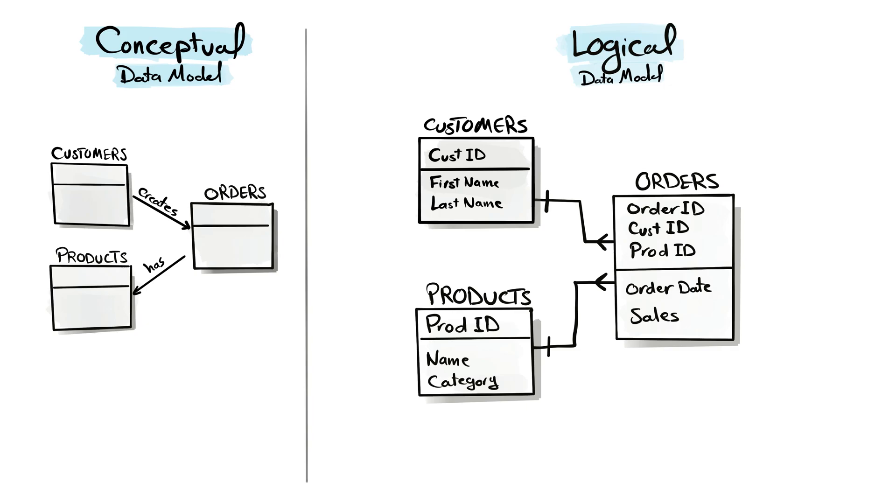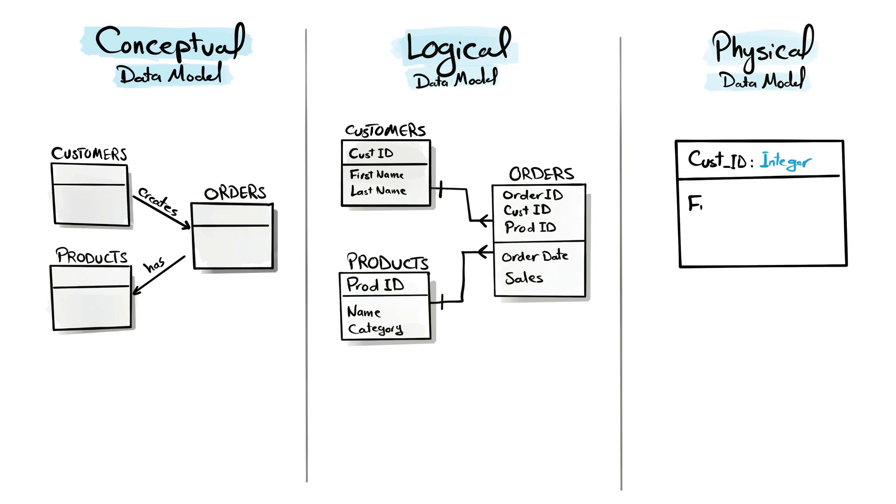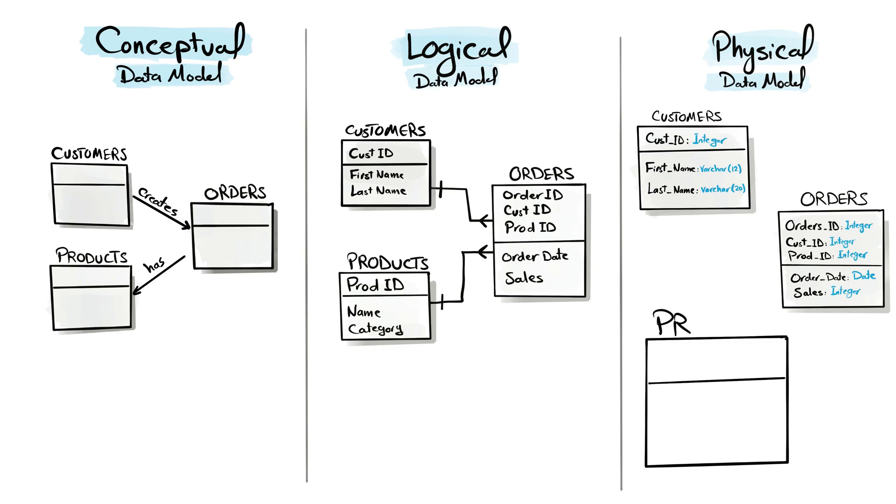The third type is the physical data model. This type represents the actual implementation of the data model. It includes all the technical details about how to store the data, like the data types of the attributes, the primary and foreign keys, indexes, and so on. This data model is used by developers to create and manage the databases.